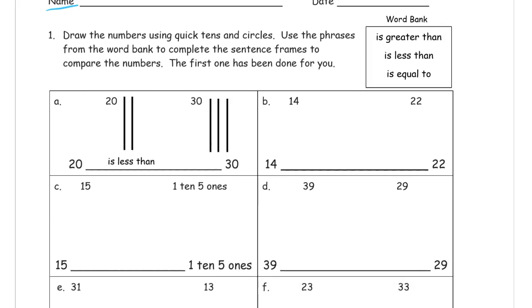We're drawing numbers using quick tens and circles, and using phrases from the word bank. Here's the word bank, so you know how to spell greater and equal. Those are two of the harder words to spell. You can just look right there to copy them.